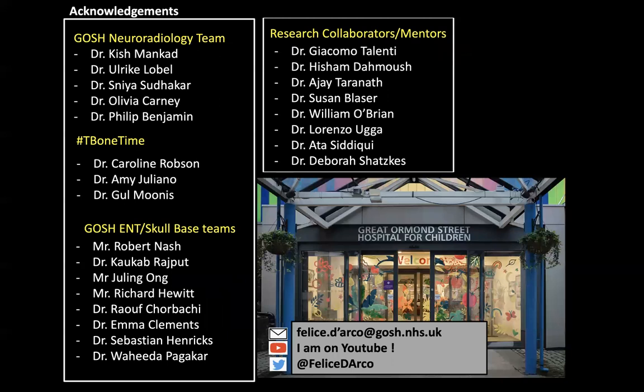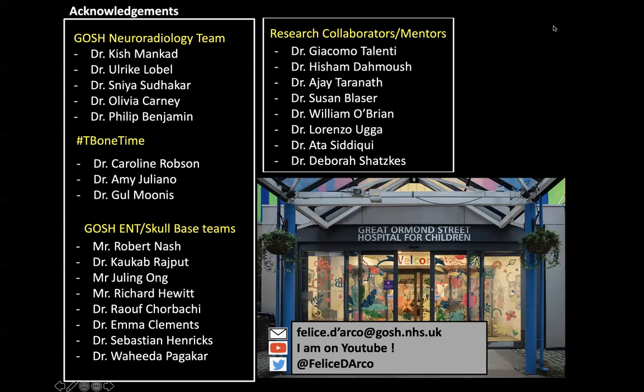In conclusion: for vascular malformations and vascular tumors, use the right nomenclature — look for mass, look for enhancement, and look for key radiological findings like fluid-fluid levels and internal flow voids. Look for aggressive radiological features in intraorbital extraocular masses, and remember the differential diagnosis of retinoblastoma, which includes the other causes of leucocoria. These are the people I would like to thank, and again I am on YouTube and on Twitter. If you have any questions, I would be very happy to answer them. Thank you very much and thank you again for the invitation.